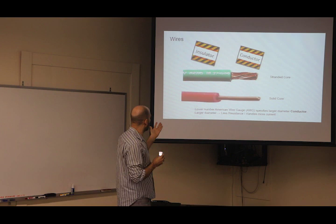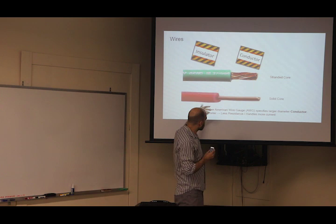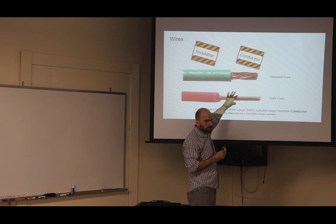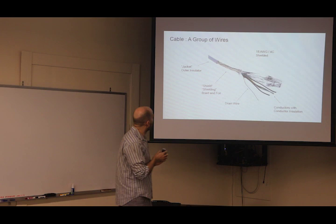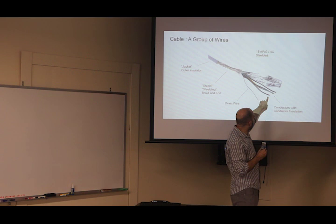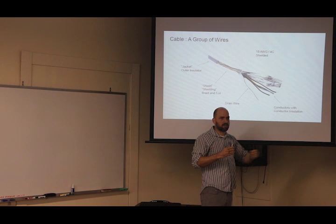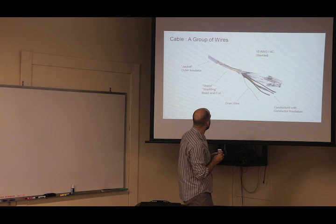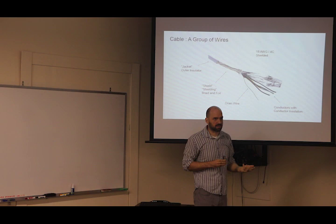We went over this because we did some hands-on, so this shouldn't be anything new. You've got the part that's actually conducting electricity and the part that should not be conducting electricity. That's the conductor and the insulator. Wire gauge is how wide or the diameter of that conductor. Smaller gauge means wider conductors. If you have a group of conductors together, bound together, that's what a cable is.